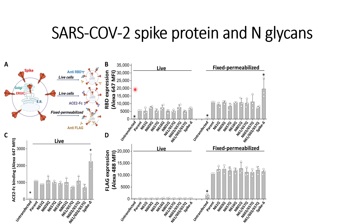This first expression analyzes the S1 part of the spike protein on live cells, meaning cell surface levels. We can see that almost all the mutants show the same expression level, whereas for the fixed permeabilized cells there is some increase in RBD expression, because fixed permeabilized cells account for both spike protein at the cell surface and also within the cells.